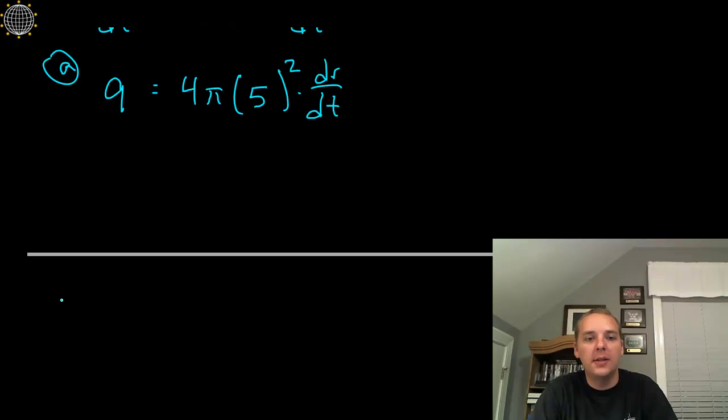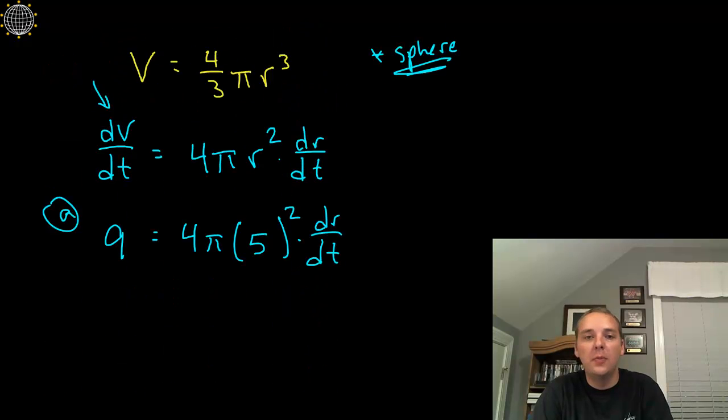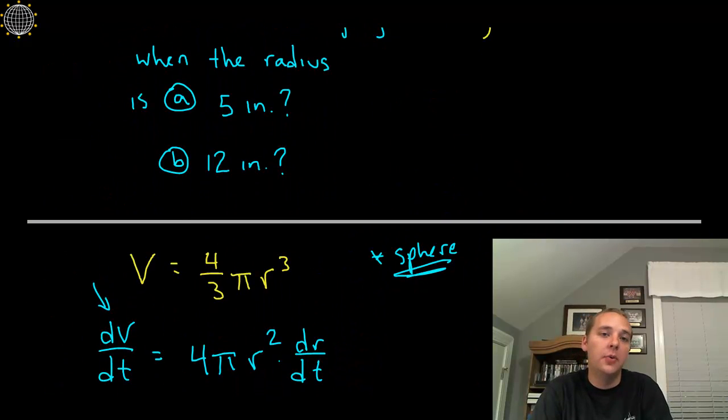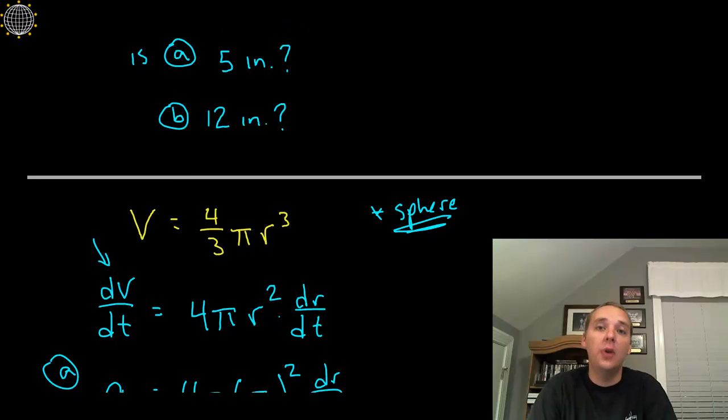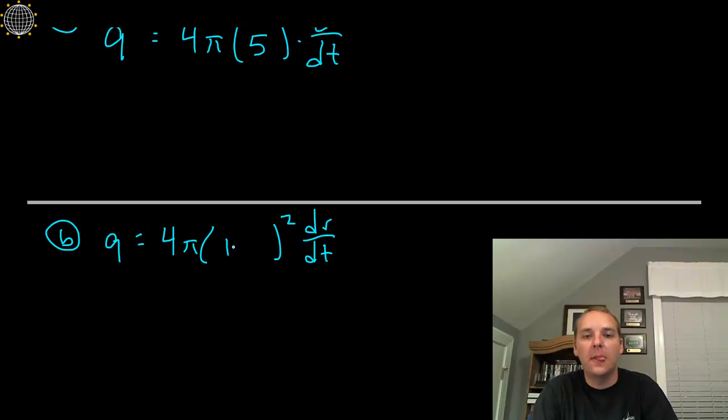And then while we're at it, let's just go ahead and copy that same thing down for part b. 9 equals 4 pi blank squared dr dt. The only difference for part b was that we wanted to consider the radius when it's 12 inches, not 5 inches.